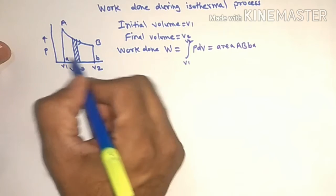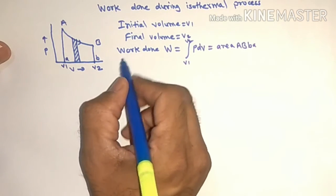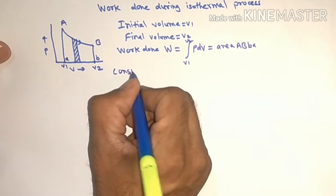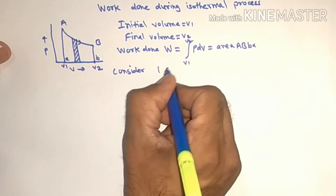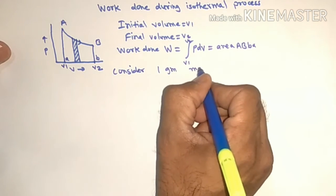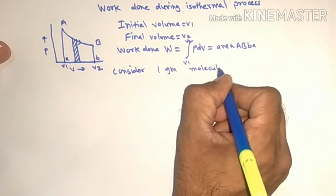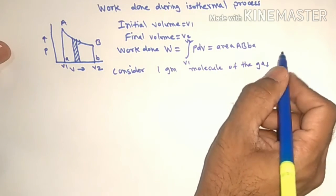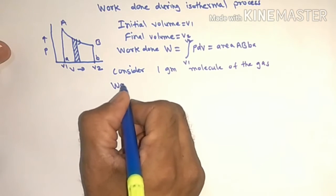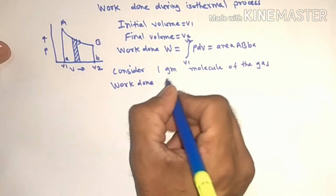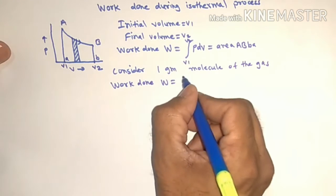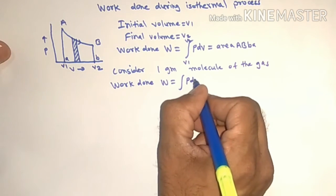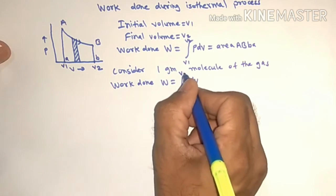Consider one gram molecule of the gas. So work done W equals integration of PdV between limits V1 to V2.